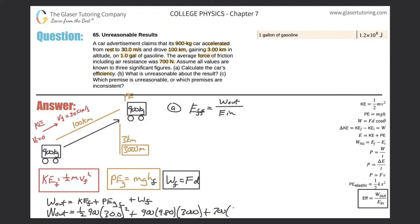And finally, we can just calculate this all now. So 0.5 times 900 times 30 squared plus 900 times 9.8 times 3000 plus 700 times 100,000.